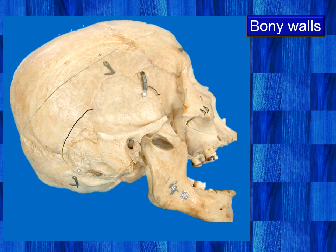We will now take a look at the bony walls of this infratemporal fossa. Instead of the specimen, I have now used a dry skull so that the bony walls are better visible. These structures are better appreciated in a bony skull. Anteriorly is the posterior surface of the body of the maxilla — that is the anterior wall. Traced superiorly you will reach the orbit; there is the infraorbital groove. That is the upper continuation.